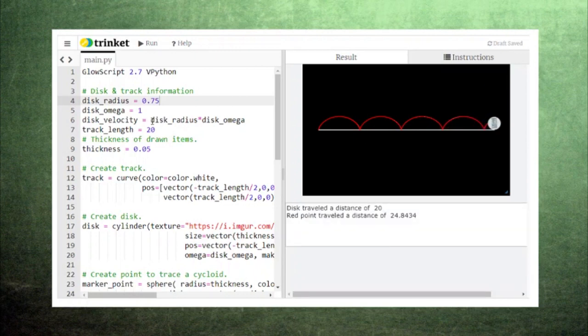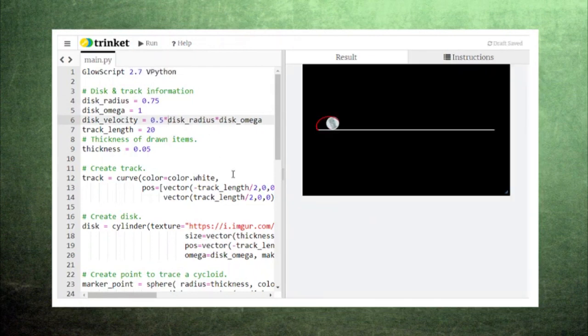You can also model what happens when a rolling disc doesn't maintain enough friction with the track by adjusting the relationship between linear velocity and rotational velocity. Notice that the cusps become broadened out, and we no longer have a cycloid.